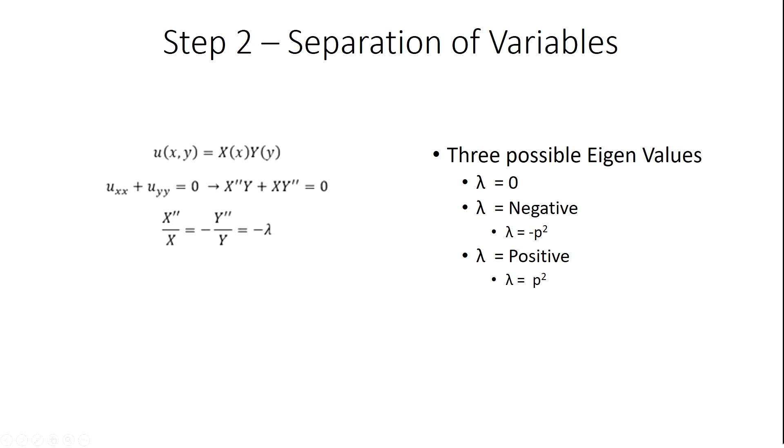To separate the variables, we take all the x terms and set them equal to lambda, and we take all the y terms and set them equal to lambda as well. After they are completely separated, we can rearrange them once again, so now we have two ordinary differential equations made up of x and y independent of one another.